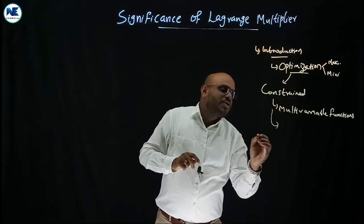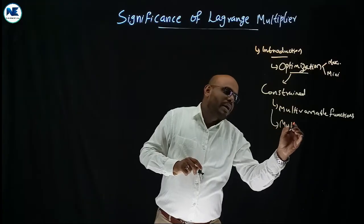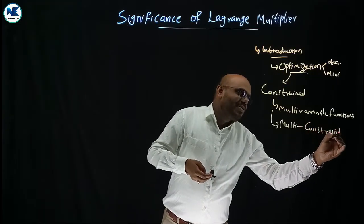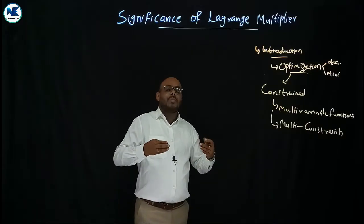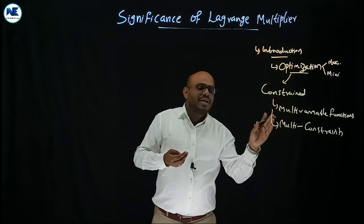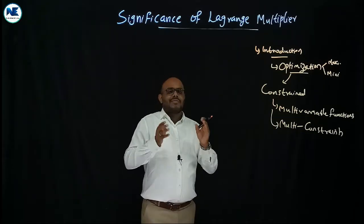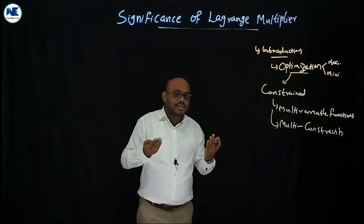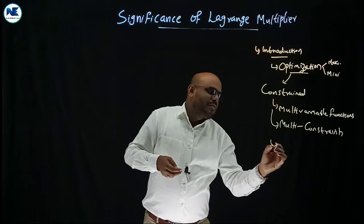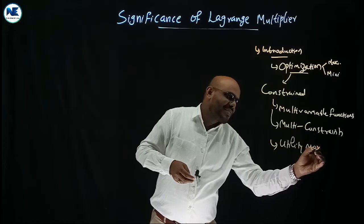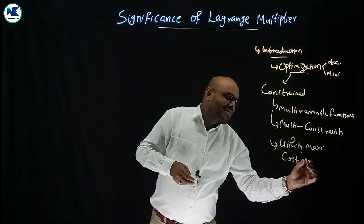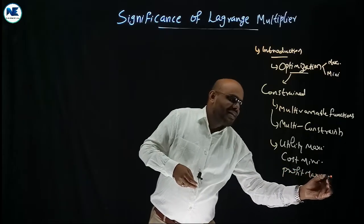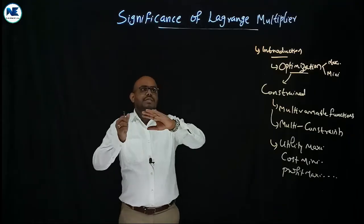It is also very useful in the case of two or even more constraints — multi-constraints. One or more constraint function optimization, that is maxima or minima. The Lagrange multiplier technique is widely used in economics, especially and extensively used in utility maximization, cost minimization, and profit maximization.